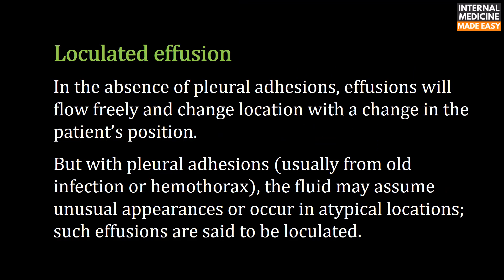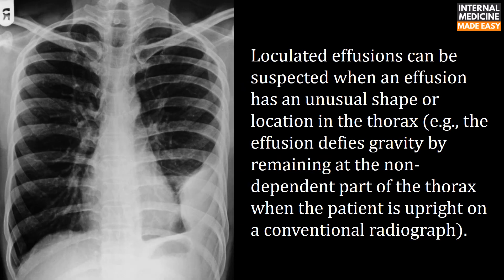Loculated effusion: In the absence of pleural adhesions, effusions will flow freely and change location with changes in the patient's position. With pleural adhesions, usually from old infection or hemothorax, the fluid may assume unusual appearances or occur in atypical locations — such effusions are said to be loculated. Loculated effusions can be suspected when an effusion has an unusual shape or location, for example defying gravity by remaining at the non-dependent part of the thorax when the patient is upright.